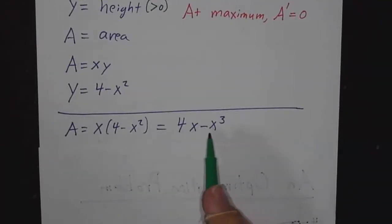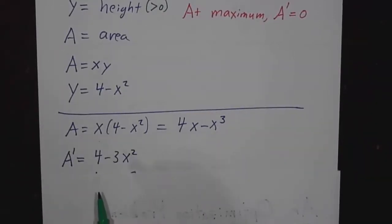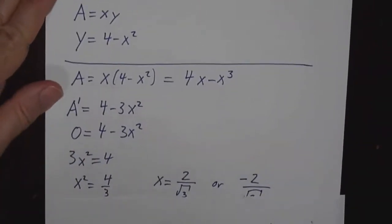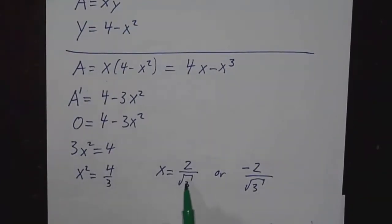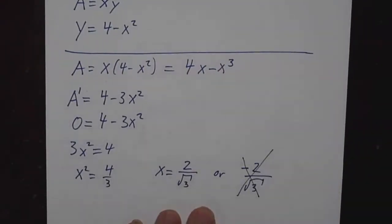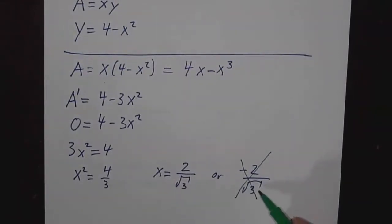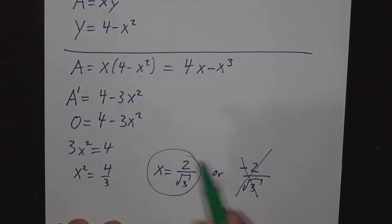Well, at the maximum, the derivative is 0. As long as the derivative is positive, we can make it bigger by increasing x. If the derivative is negative, we can make it bigger by decreasing x. At the maximum, the derivative is 0. What goes up has to stop before it comes down. So we set 0 equals 4 minus 3x squared. 3x squared is 4, x squared is 4 thirds, which means that x is either 2 over root 3 or minus 2 over root 3. But we wanted x positive, so we're left with x is 2 over root 3.